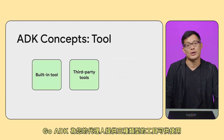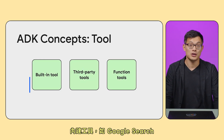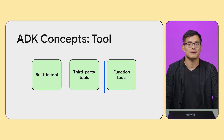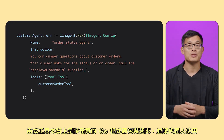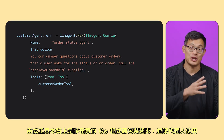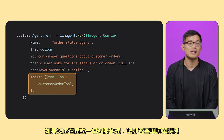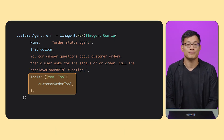Go ADK provides three types of tools for your agents to use: built-in tools like Google search, third-party tools like the ones provided by MCP servers, or function tools. Let's talk about function tools. A function tool essentially wraps arbitrary Go code and makes it available to the agent. If you're building a customer service agent to let customers ask about the status of their order, you can add a function tool in the tools method of your agent definition.